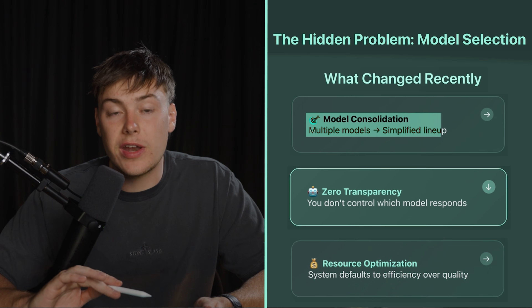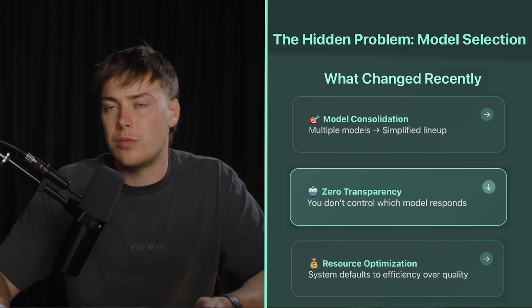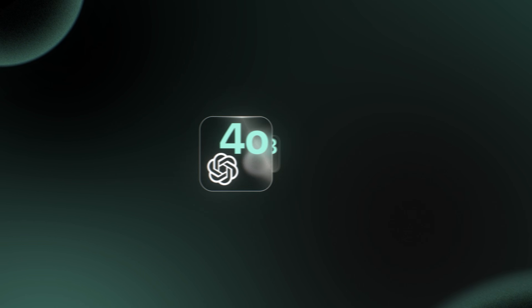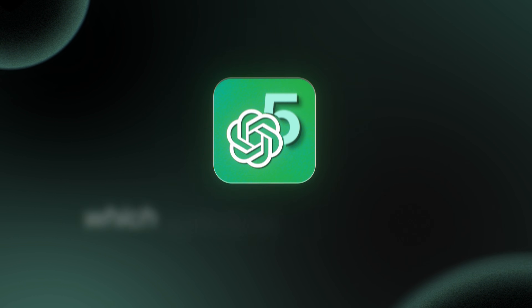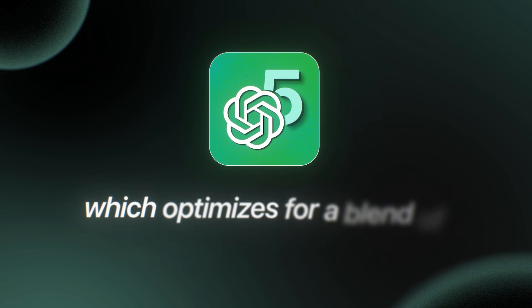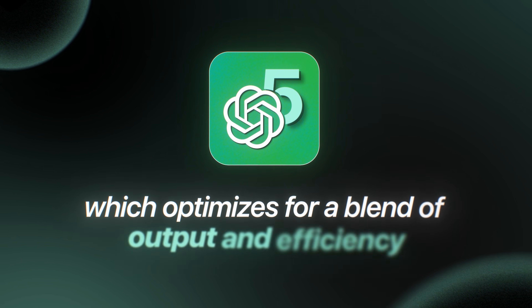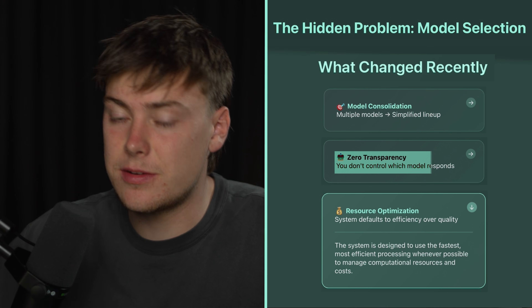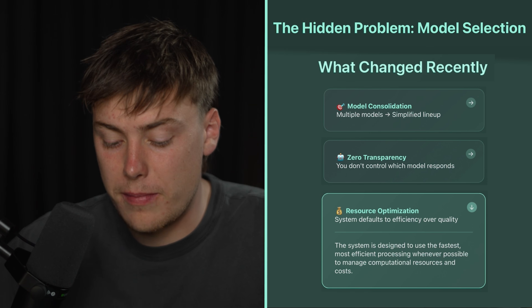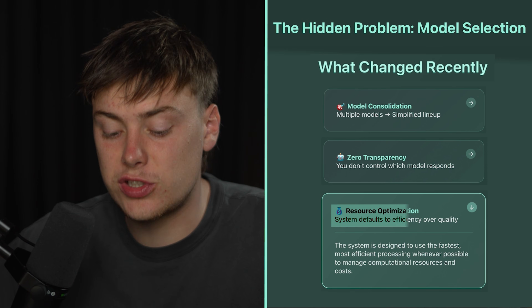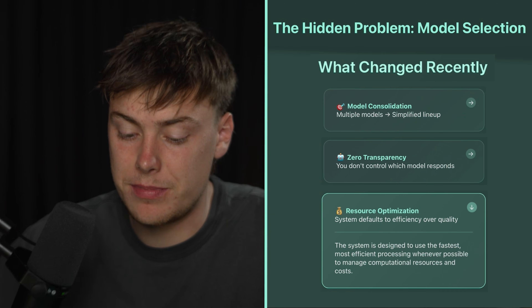Here's what actually changed from GPT4 to GPT5. They've consolidated models — we used to have 4.0 and O3. They've consolidated into GPT5, which optimizes for a blend of output and efficiency. And the system, especially if you're on auto mode, automatically defaults to efficiency over quality.